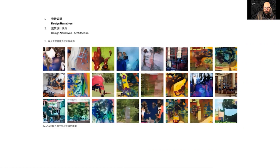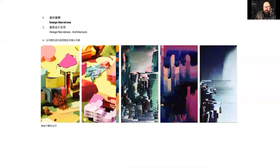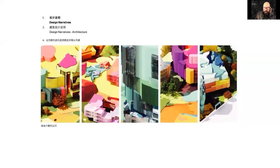Attentional Generative Adversarial Networks — in short, AttnGANs — allow attention-driven multi-stage refinement for fine-grained text-to-image generation. Attention in neural networks imitates the way that humans are able to concentrate on particular aspects of their sensory input and blend out the rest. The architecture of the AttnGAN consists of two components. Component one is an attentional generative network which contains an attention mechanism that draws different sub-regions of the image, focusing on words most relevant to the sub-region being drawn. The generative network uses initially a global sentence vector to generate a low-resolution image, then uses the image vector in each sub-region to query word vectors via an attention layer to form a word context vector.